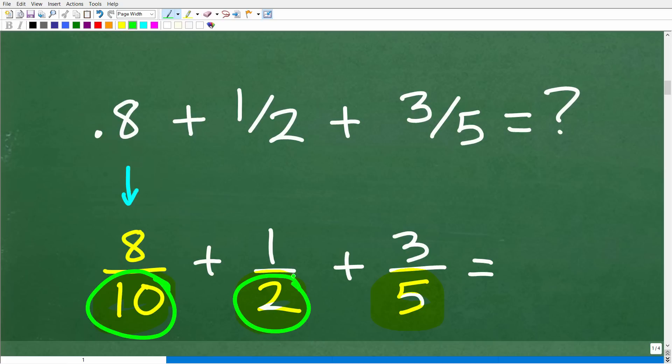What is that called? If you're like, that's called the lowest common denominator, you would be absolutely correct. The LCD is effectively the lowest number that both 10, 2, and 5 divide into without a remainder.